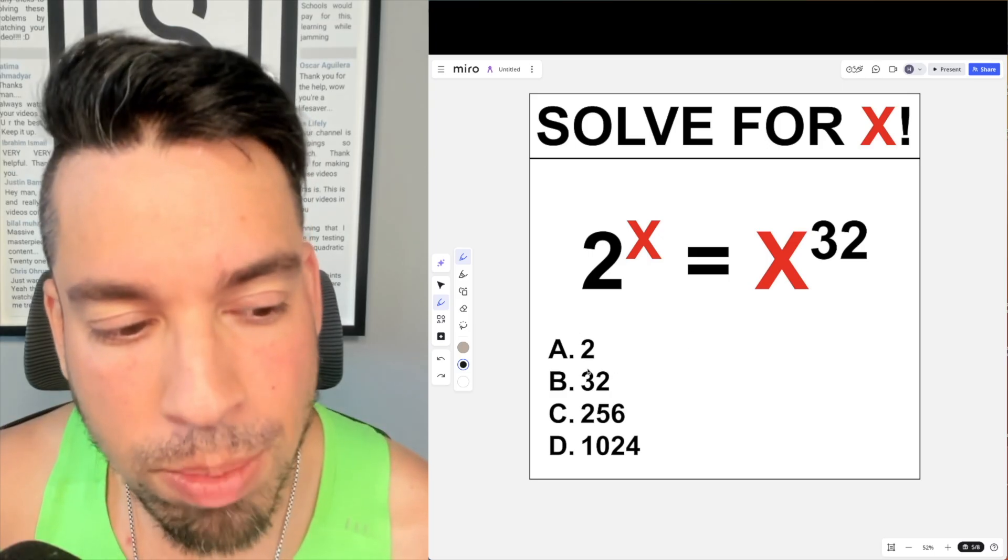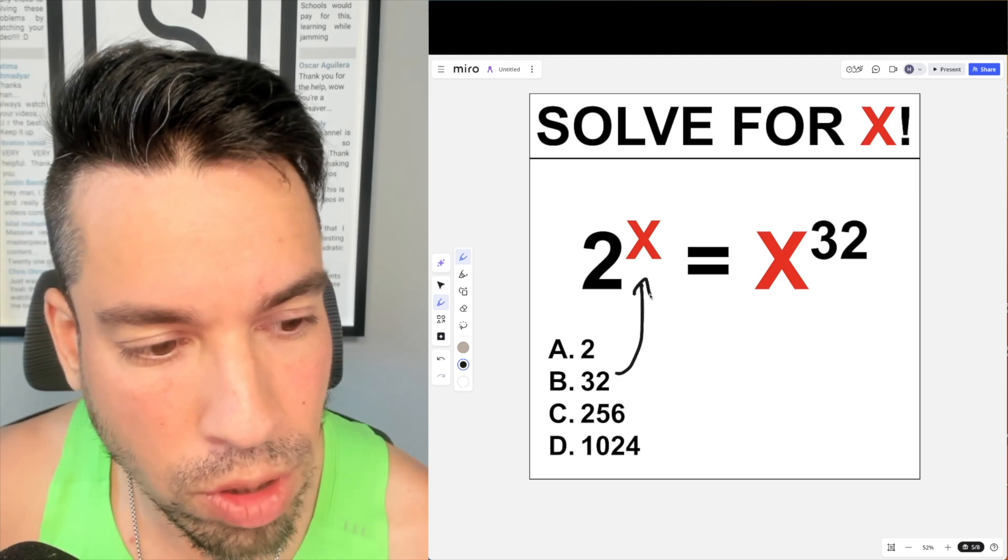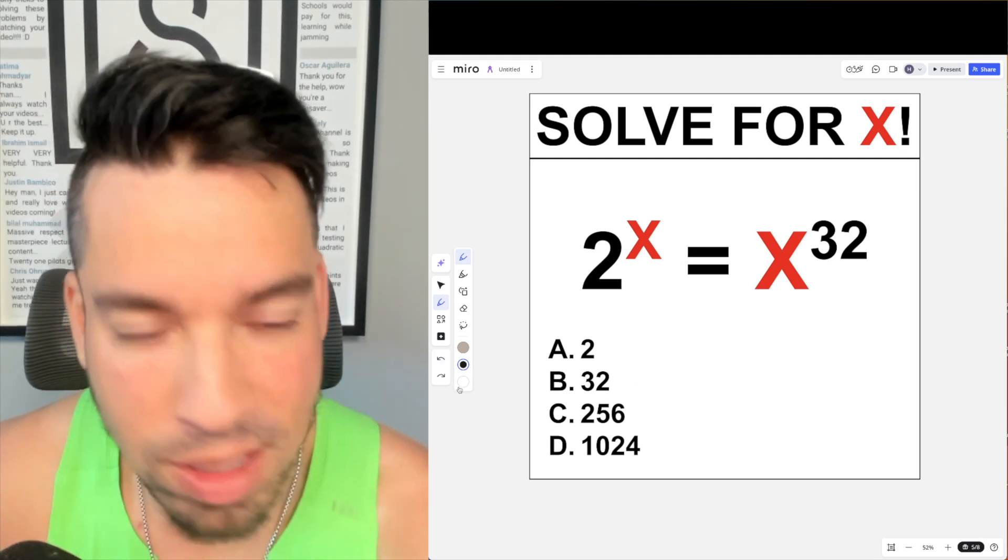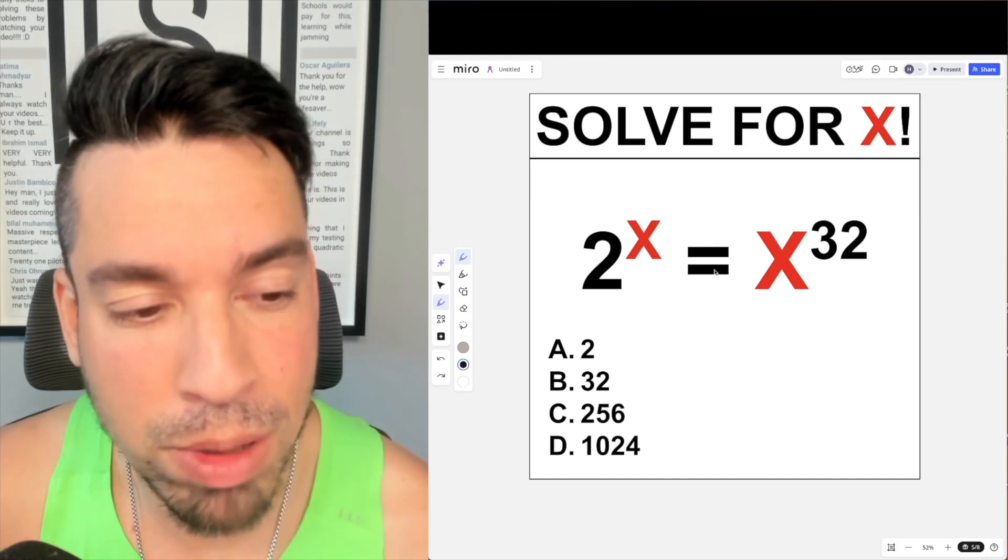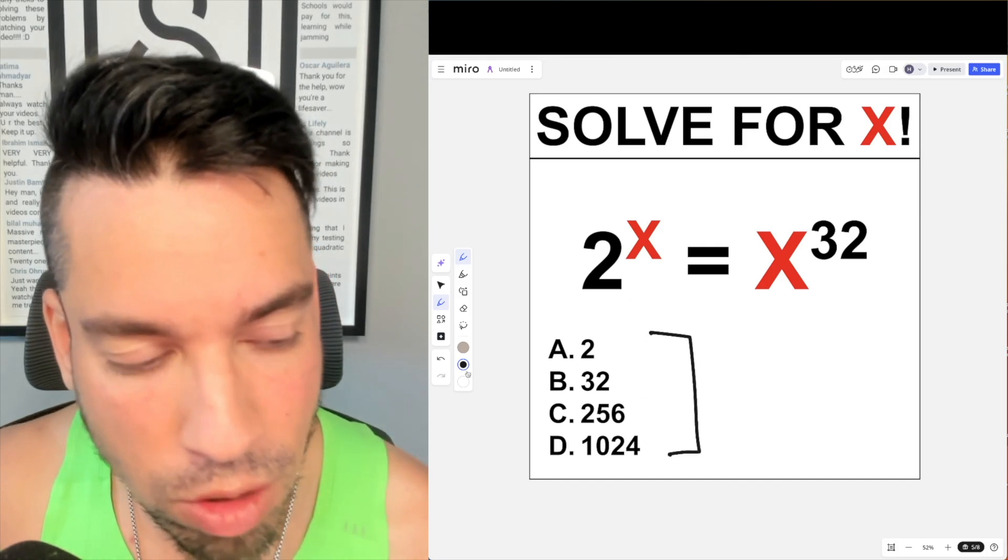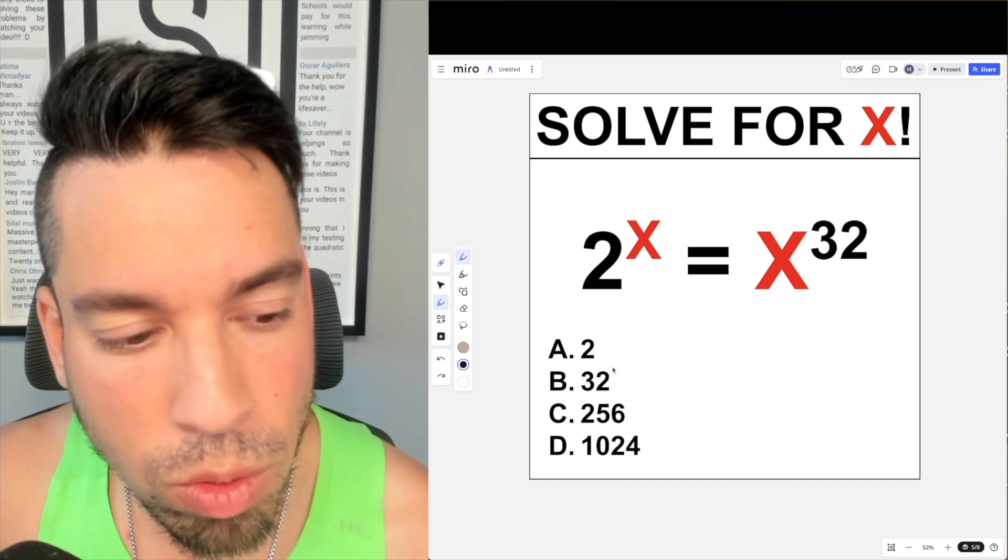So here's the deal: because these numbers are so huge, even saying 2 to the 32nd power or 32 to the 32nd power in most calculators, it's not going to work. It's going to kind of blow up. But there's another way that we can approach this: solving backwards and looking at these choices.